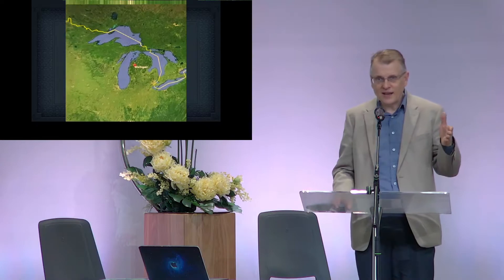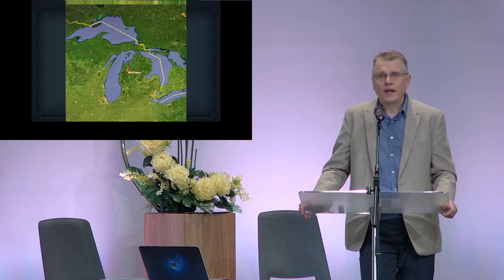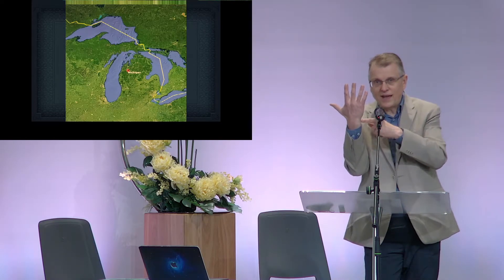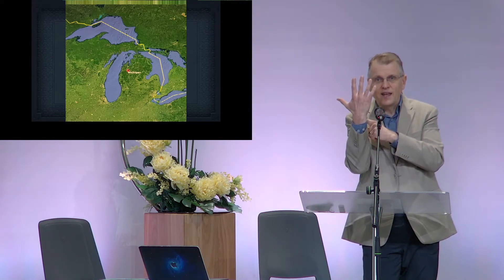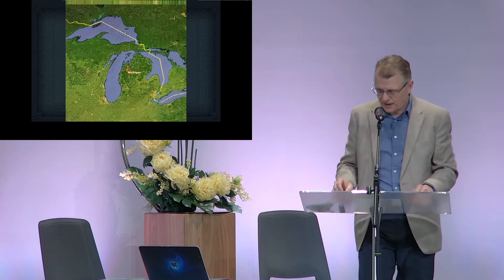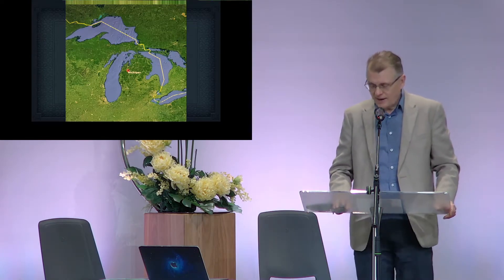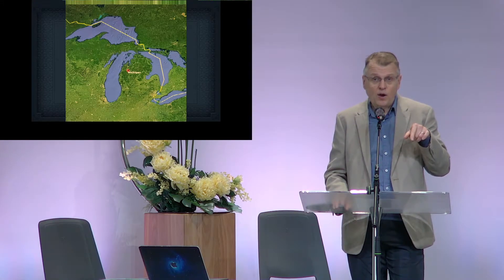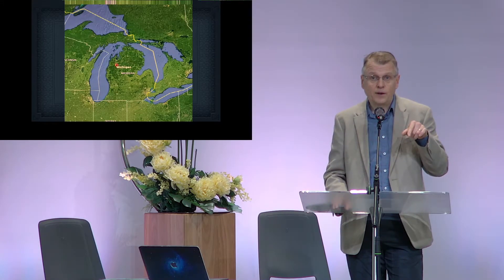This is the state called Michigan. On the left you can see Lake Michigan, on top there is Lake Superior, and on the right there's Lake Huron. Michigan looks like a glove a bit — it has this part of the hand, and there's also an upper part of Michigan.